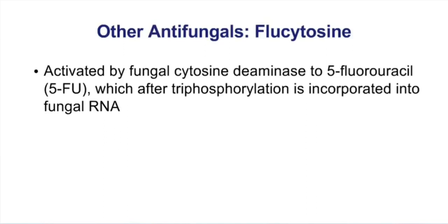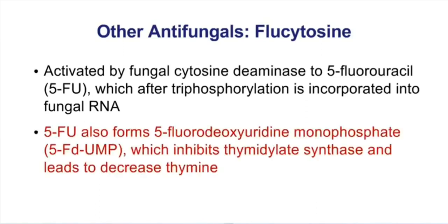Flucytosine is activated by fungal cytosine deaminase and converted to 5-fluorouracil (5-FU). 5-FU forms 5-fluorodeoxyuridine monophosphate (5-F-dUMP), which competes with deoxy-UMP for the enzyme thymidylate synthase. These drugs inhibit thymidylate synthase, the enzyme that converts deoxy-UMP into deoxy-TMP. In the presence of flucytosine or 5-FU, cells can't form thymine and that leads to cell death.